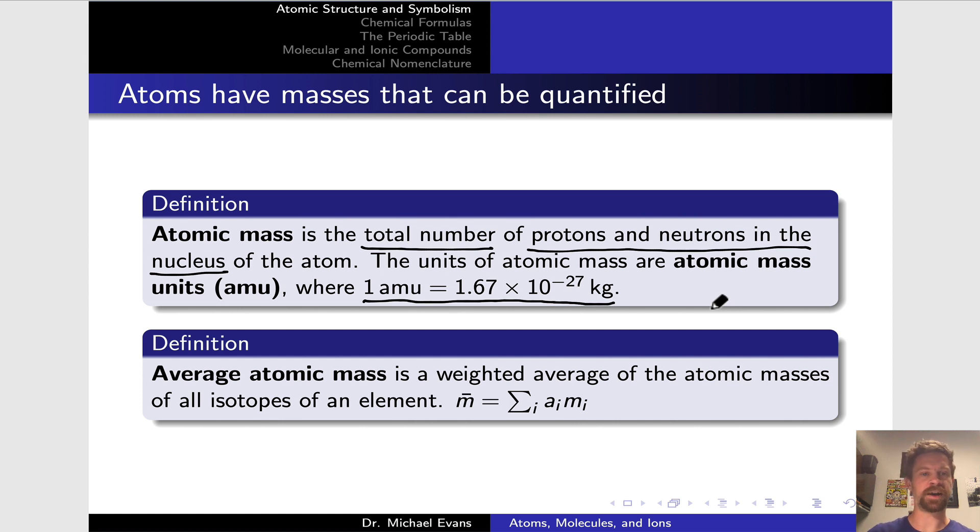We can look at, for example, an isotope like carbon-12 with six protons and six neutrons in the nucleus, and conclude immediately that its atomic mass, again ignoring the electrons because they're so much lighter than the protons and neutrons, is 12 AMU.